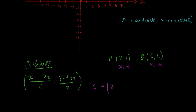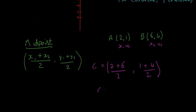...plus x₂, which is 6, divided by 2. Then y₁, which is 1, and y₂, which is 4, divided by 2. So that's C equals 8 over 2 and 5 over 2...